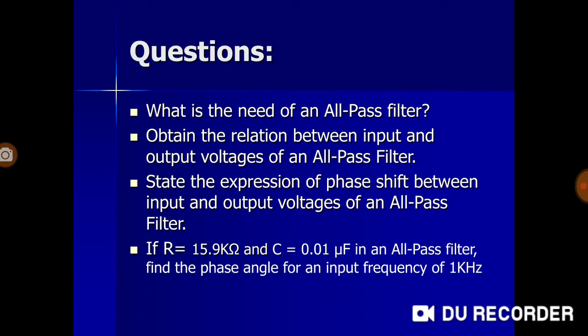Review questions for this lecture: What is the need for an all-pass filter? Obtain the relation between input and output voltages of an all-pass filter. State the expression of phase shift between input and output voltages. As a design problem: given R = 15.9 kΩ, C = 0.01 μF, find the phase angle φ when the input frequency is 1 kHz. Please try to verify your understanding of the all-pass filter's purpose, circuit, and phase shift introduction.